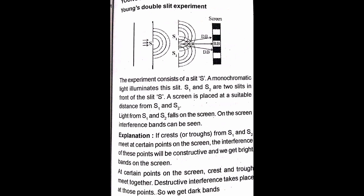So on the screen we can see bright and dark fringes — that is the Young's double slit experiment setup. This is how bandwidth is derived.